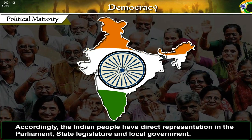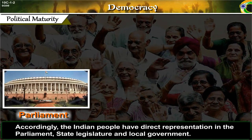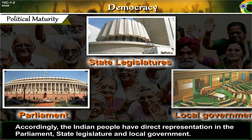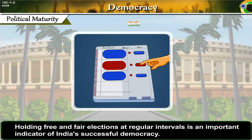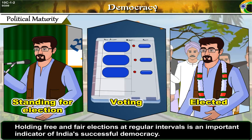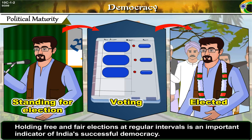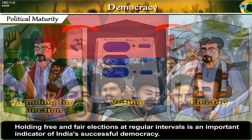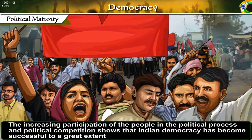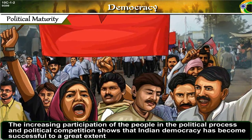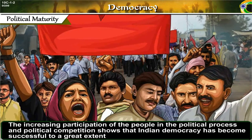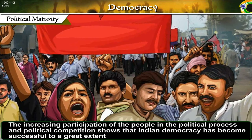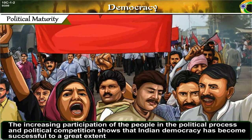Accordingly, the Indian people have direct representation in the parliament, state legislature, and local government. Holding free and fair elections at regular intervals is an important indicator of India's successful democracy. The increasing participation of the people in the political process and Indian political competition shows that Indian democracy has become successful to a great extent.